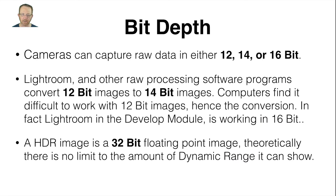Bit depth. Cameras can capture raw data in either 12, 14, or 16 bits. Lightroom and other raw processing software programs convert 12-bit images to 14-bit images. Most of us have still got 12-bit sensors — computers find it difficult to work with 12-bit images, hence the conversion. In fact, Lightroom in the develop module is working in 16-bit. A HDR image is a 32-bit floating point image, so theoretically there's no limit to the amount of dynamic range it can show. But you can't create more dynamic range with a 32-bit image if it isn't already there in the scene.